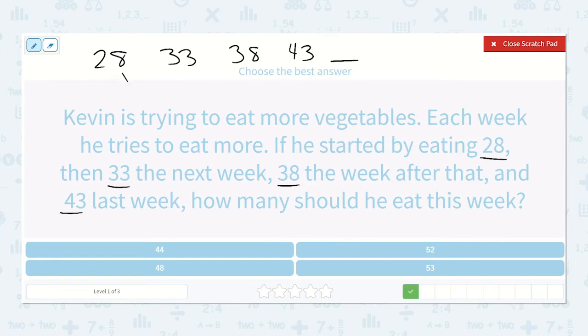How much do we add to get from 28 to 33? I see that we add 5. 33 to 38? That is also 5. 38 to 43? That's 5 again. 43 plus 5 would be what? Yeah, 48. So 48 is our final answer.